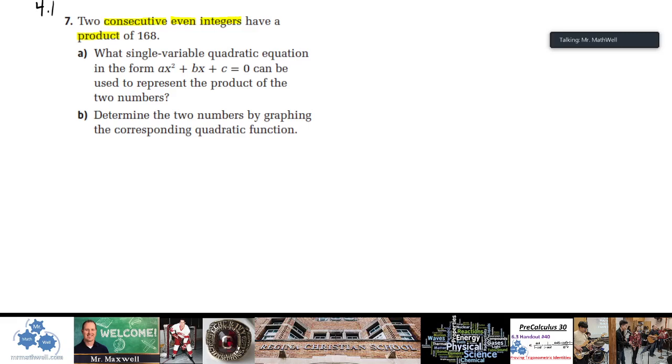In these type questions, what you want to do is set up an equation. Letter A here guides us in that way. What single variable quadratic equation in this form can be used to represent the product? How do we represent the product? It's going to be a multiplication of two things. What are the two things? Two consecutive even integers. So let X equal the first even integer.